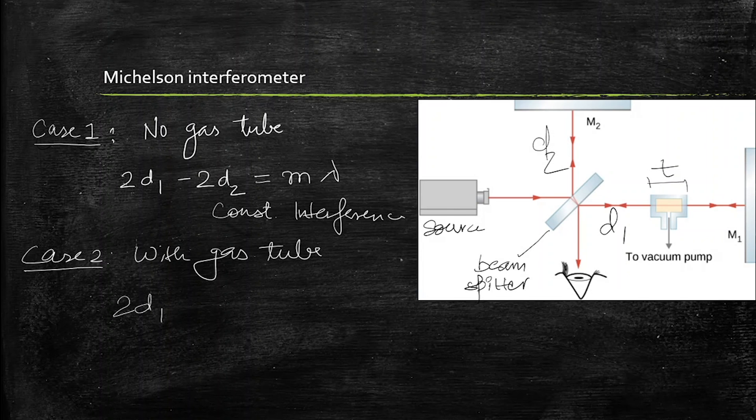If the length of the tube is T, so we will minus this distance 2T, and add on this distance. If the refractive index of the gas, if the refractive index of the gas is mu, so we will add on this thickness in the path.